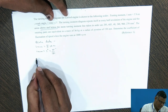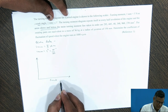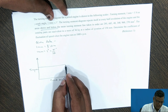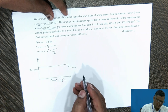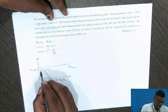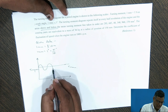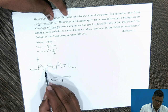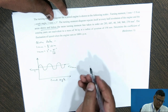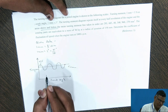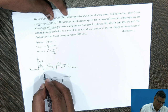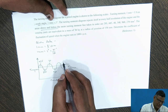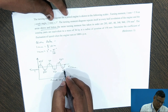Let us draw the turning moment diagram. The x-axis represents crank angle and the y-axis represents torque or turning moment, with T mean indicated. The 6 areas in order are: 295 mm², 685 mm², 40 mm², 340 mm², 960 mm², and 270 mm².